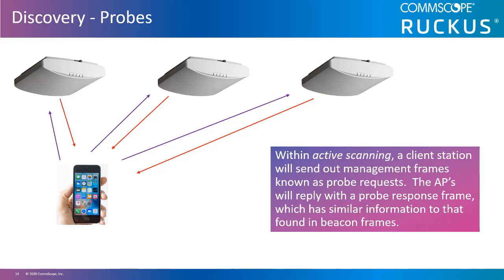Clients actively scanning will use probe frames to find access points within a service set. These frames usually include the service set identifiers of the wireless network the client is trying to join. Access points that detect the probe request and are using the service set specified within the probe request will reply with a probe response. The probe response is a unicast message and contains information about the network, such as the MAC address of the responding access point.